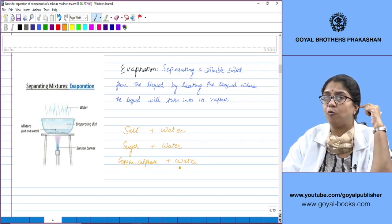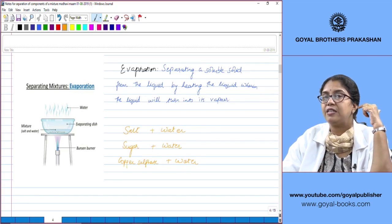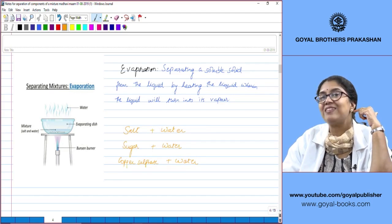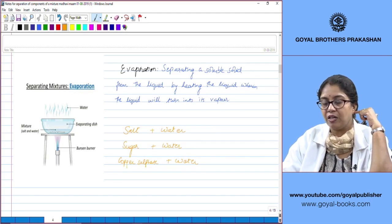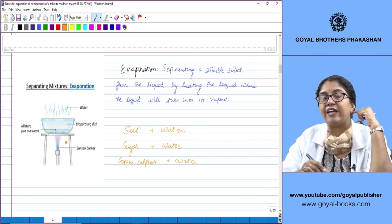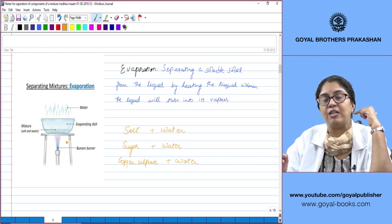Copper sulphate from water when you are separating it is more precisely known as crystallization. Now, how do we carry out this process of evaporation in the laboratory?